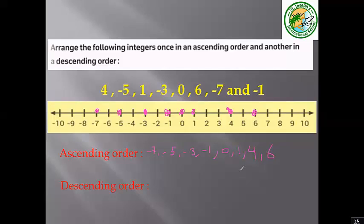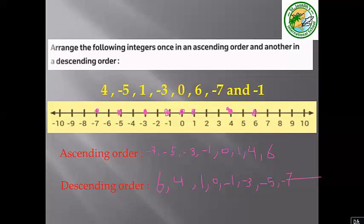Descending order means arranging from biggest to smallest, starting from the numbers on the right of the number line: 6, 4, 2, 1, 0, negative 1, negative 3, negative 5, and negative 7.